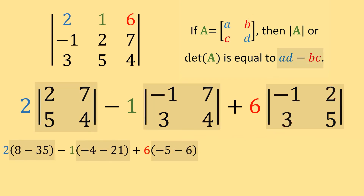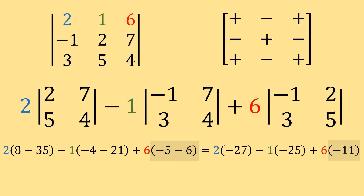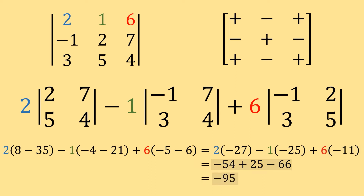Now all we have to do is simplify. We get 8 minus 35 equals negative 27. Negative 4 minus 21 equals negative 25. Negative 5 minus 6 equals negative 11. Then 2 times negative 27 is negative 54. Negative 1 times negative 25 is positive 25. And 6 times negative 11 is negative 66. Adding all these together, we get negative 95. So the determinant of our 3x3 matrix is negative 95.